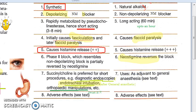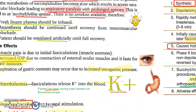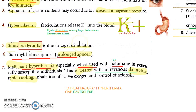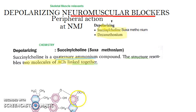In this video we covered the uses and adverse effects of succinylcholine — including increased intraocular pressure, hyperkalemia, increased intragastric pressure, bradycardia, and prolonged apnea (succinylcholine apnea). Malignant hyperthermia is treated with IV dantrolene. Succinylcholine is also known as suxamethonium, and a similar drug is decamethonium.